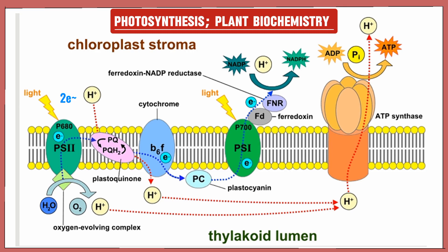The oxygen-evolving complex splits water molecules. The electrons used by Photosystem II are replenished by splitting water molecules as a byproduct. Once two water molecules have been split, the oxygen atoms combine to form O₂, which the plant releases as a waste product. The water splitting also releases two hydrogen ions — protons — into the lumen, increasing the proton gradient so there is a higher concentration of protons in the lumen than in the stroma. The greater the gradient, the more protons want to diffuse to the other side.